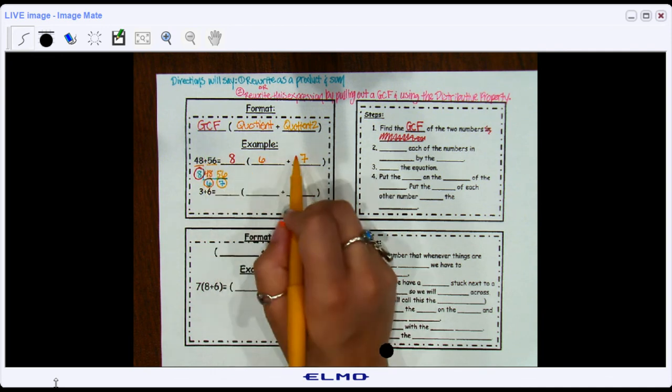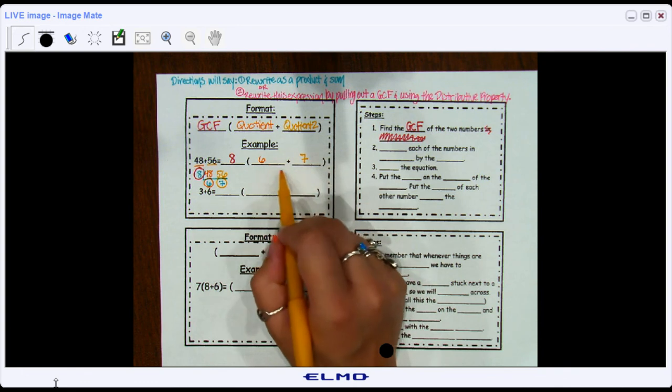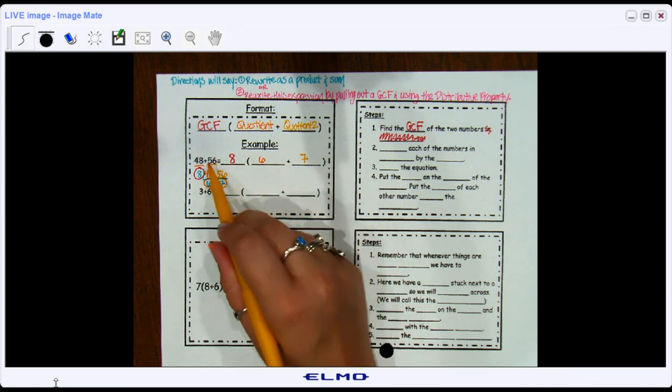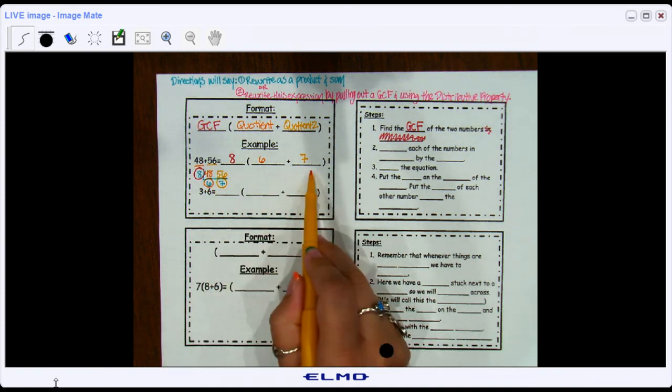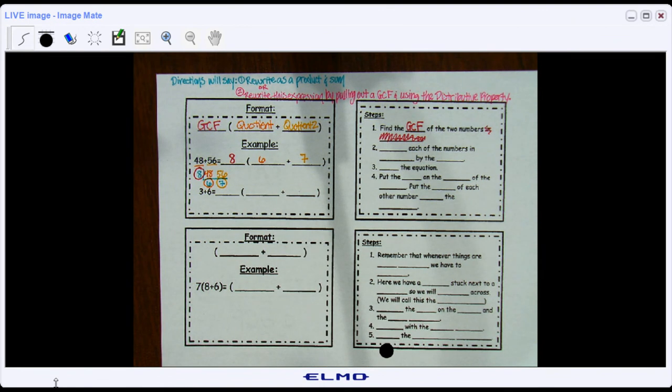8 times 7 is 56. And if you have nothing in common in these parentheses, no other factors that can go into both of them, and when you multiply this number out in front, you got the same thing that you started with over here, you know that that is the correct expression of rewriting this as a product and a sum.